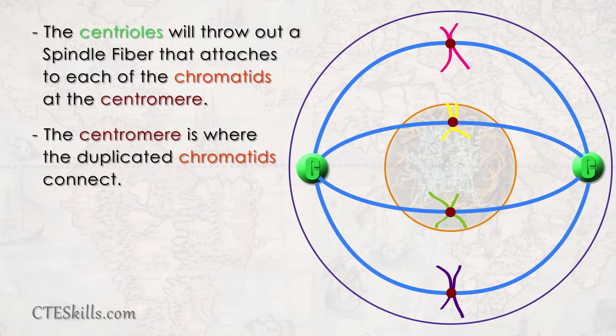Centromere is a structure by which the duplicated chromatids connect to each other. Like Siamese twins, the chromatids are joined.